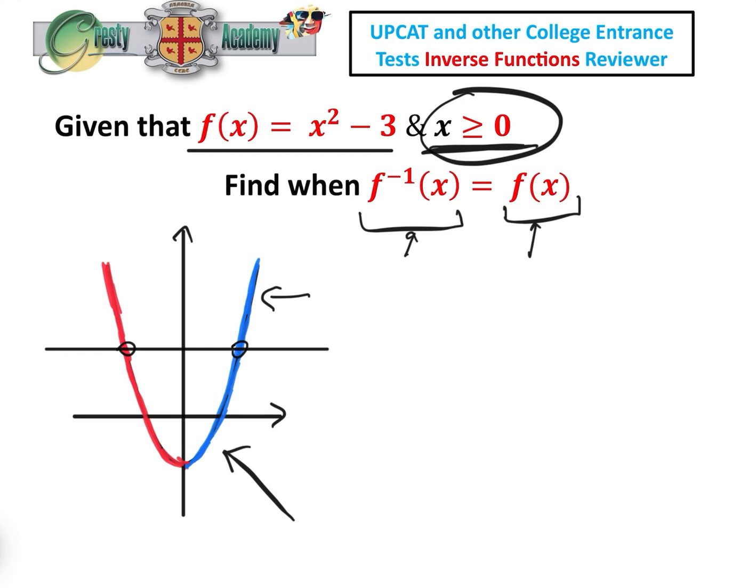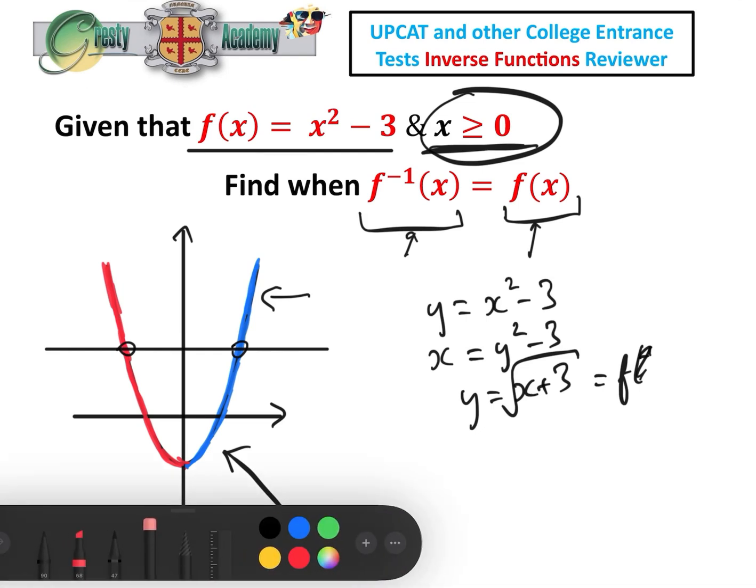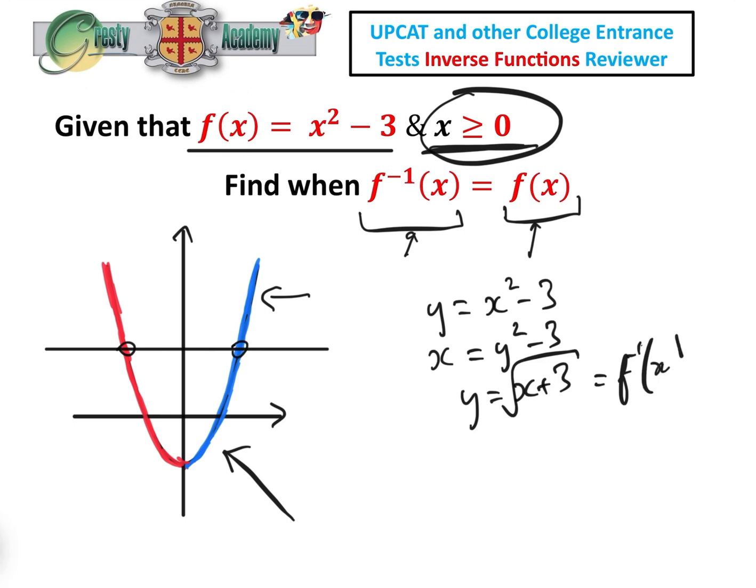OK, so given the domain restriction, let's have a look at what the inverse is. We know that y equals x squared minus 3, and to find the inverse, we simply flip y and x, and then we make y the subject of the equation, i.e. y equals the square root of x plus 3. And so that is the inverse,